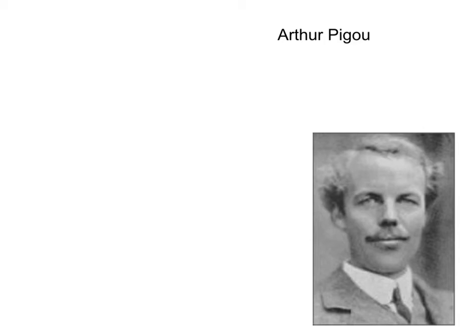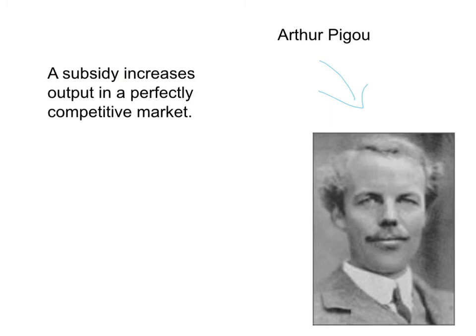Is there a better way? Yes. And we can thank this man, Arthur Pigou, an economist who lived in the early part of the 20th century, for the answer. If we have a perfectly competitive market, how do we increase the level of output? Well, one way is to use a subsidy. We know that a subsidy increases output in a perfectly competitive market. When there were no externalities, that led to a deadweight loss. But in the current situation we have an externality, and we know that the perfectly competitive market has a deadweight loss and we want to increase output to get rid of it. Arthur Pigou put two and two together and noted that in a situation of a positive externality, a government can put a subsidy on the relevant product, increase output, and fix up the market.